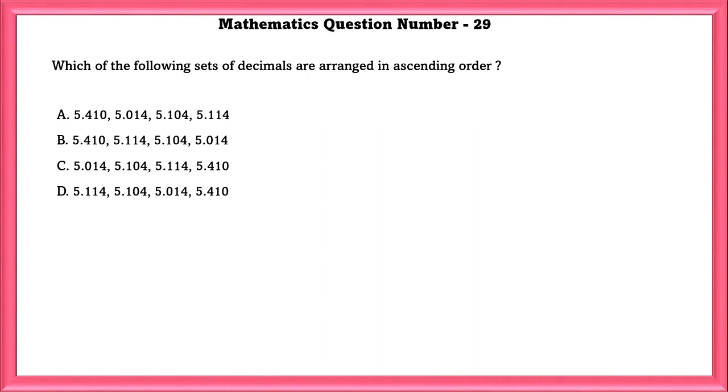Mathematics Question Number 29. Which of the following sets of decimals are arranged in ascending order? Option C is arranged in ascending order.